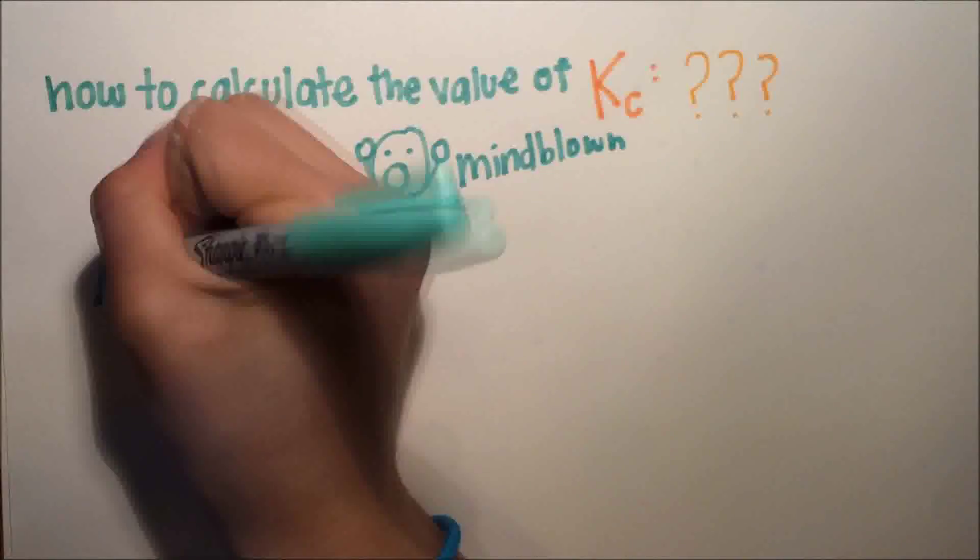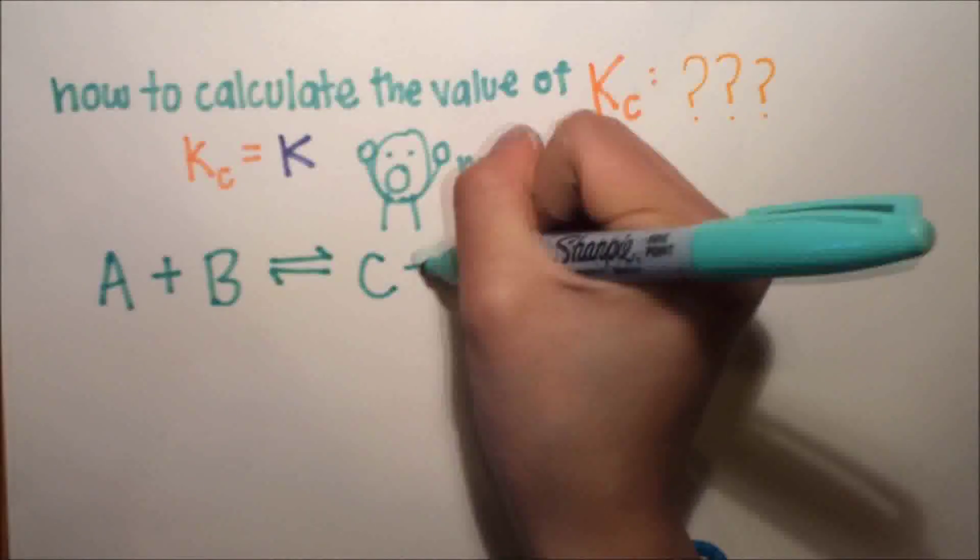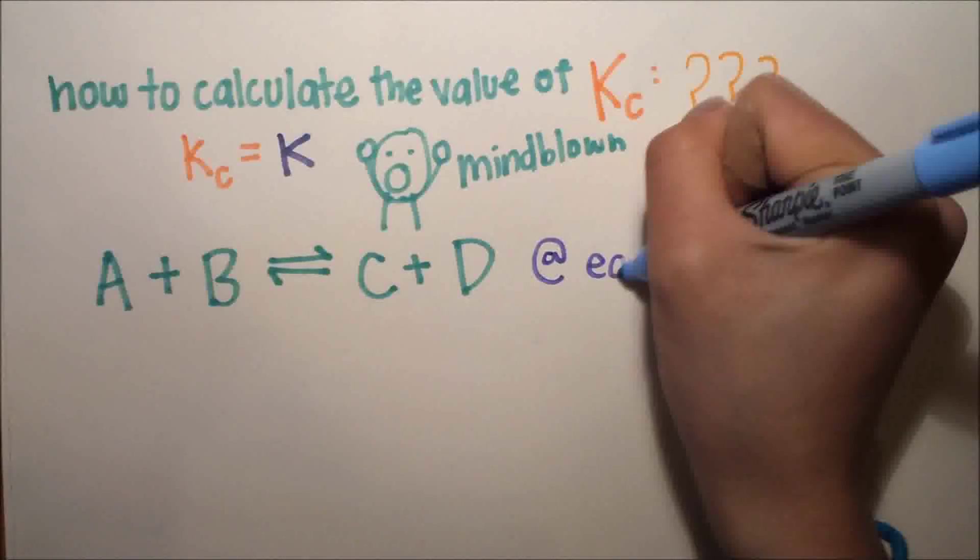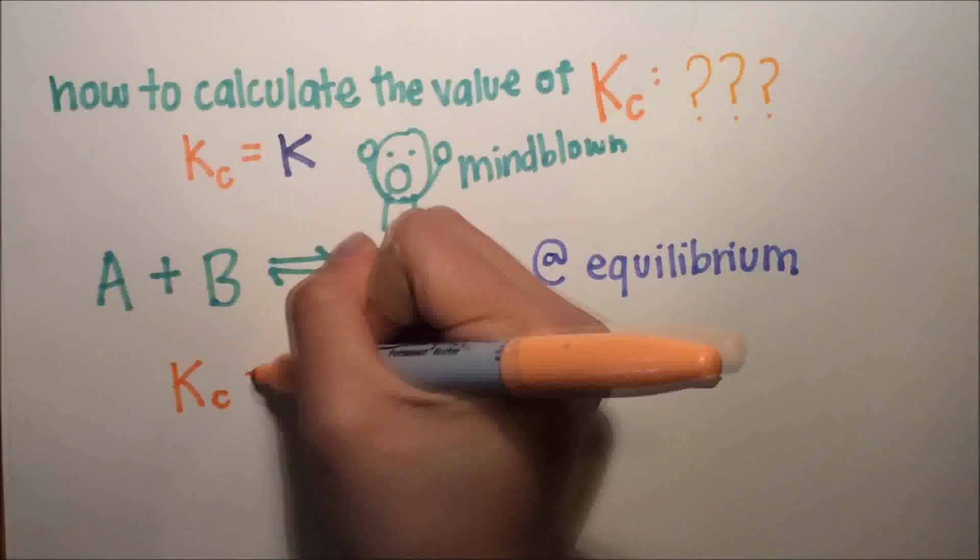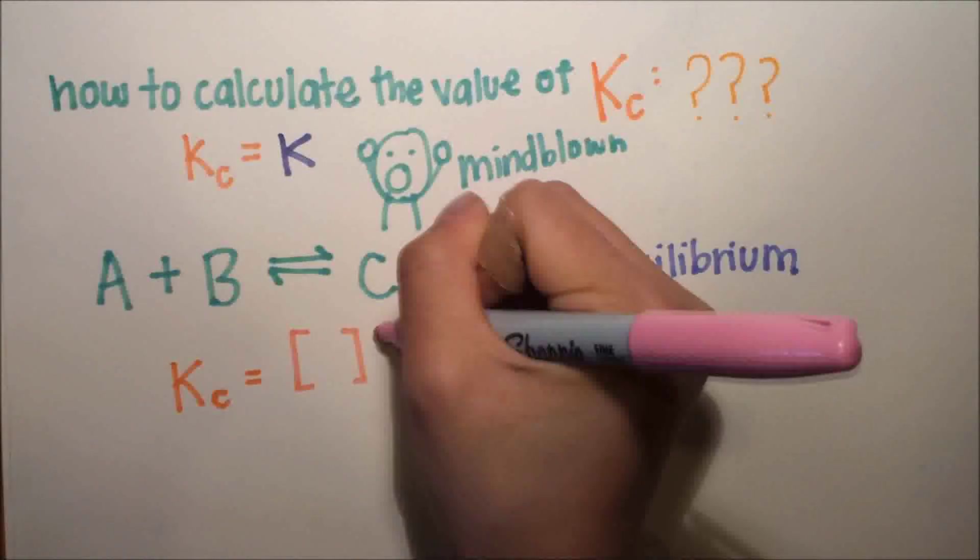So now let's pretend we have this reaction: A plus B reacts to make C plus D, and this system is at equilibrium. So to calculate Kc or K, or whatever your teachers can call it, use this equation.